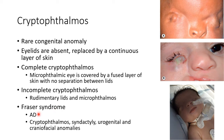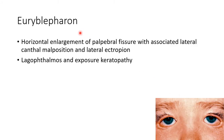Now let us discuss about Fraser syndrome. It is an autosomal dominant condition. The clinical features include cryptophthalmos, syndactyly, urogenital and craniofacial anomalies. This picture shows a baby with Fraser syndrome; you can see the cryptophthalmos.